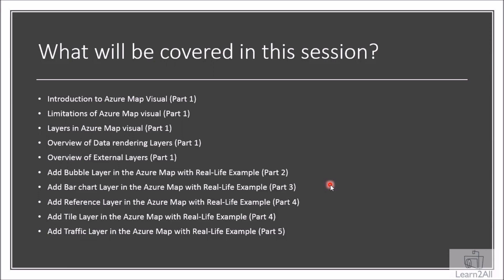Before we get started, let me show you what we are going to cover during this session. First we will start with the introduction of Azure Map visualization, then discuss some limitations, then move on to the layers. There are two types of layers: data rendering layers and external layers. We will deep dive into these, covering five layer types: bubble layer, bar chart layer, reference layer, tile layer, and traffic layer.